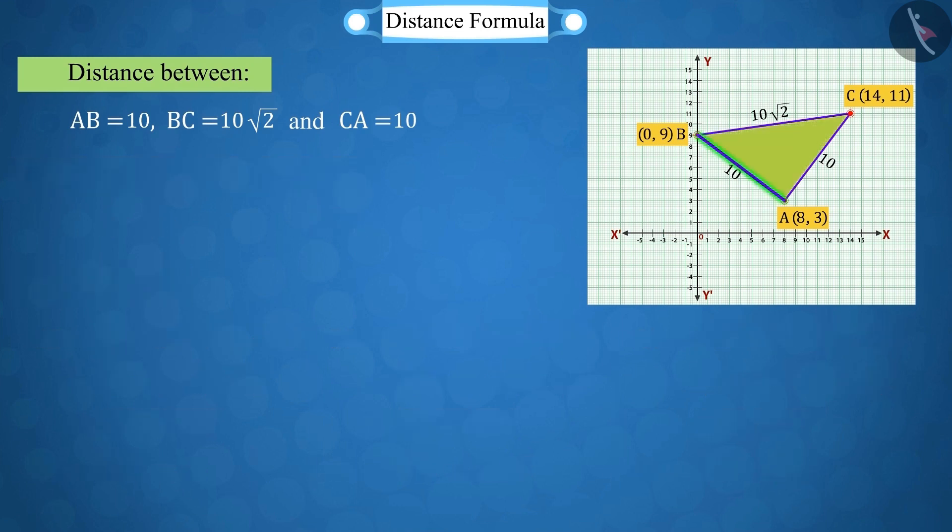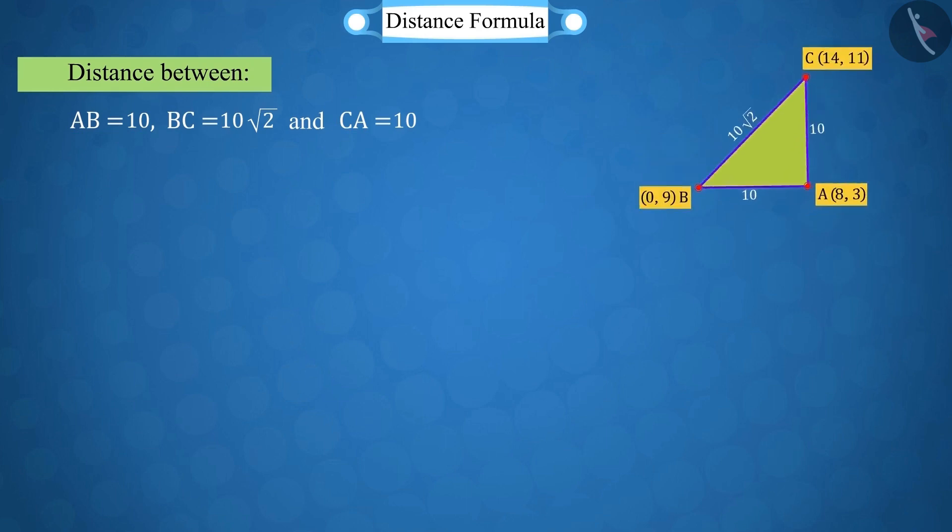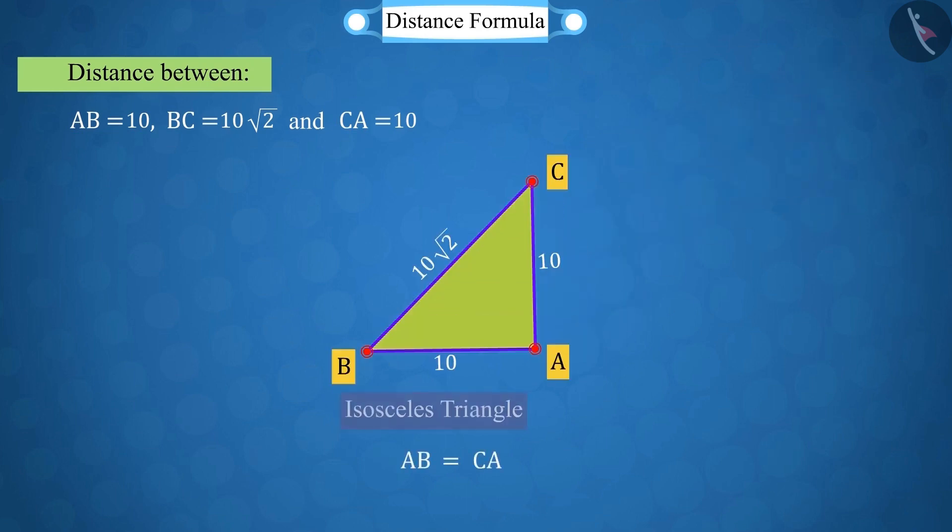If you look carefully, we get the values AB and CA as equal, which satisfies the condition of an isosceles triangle.